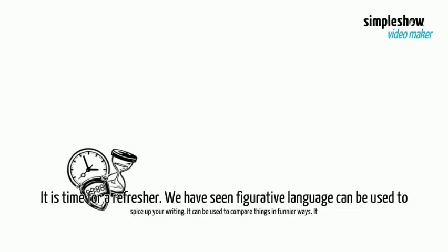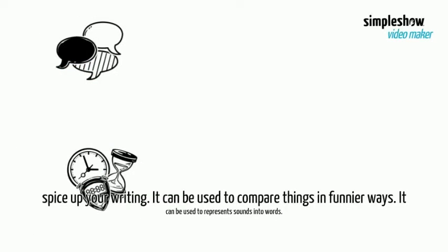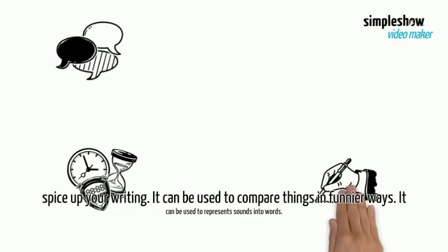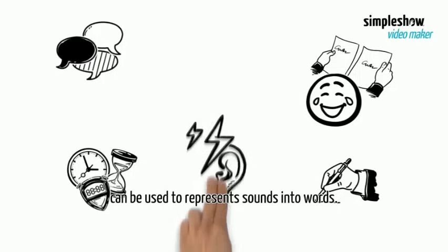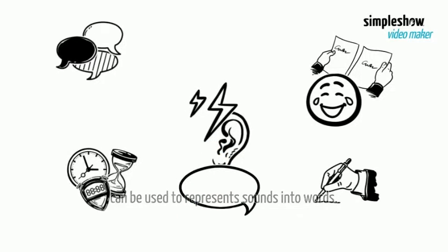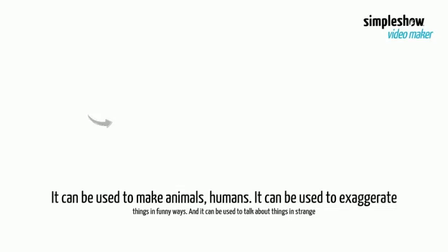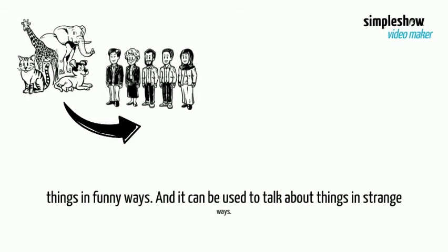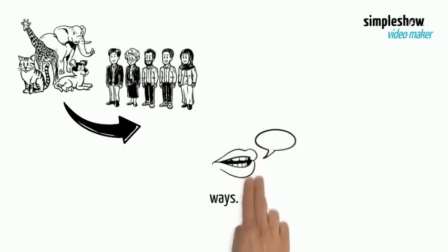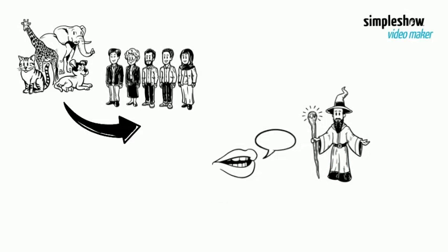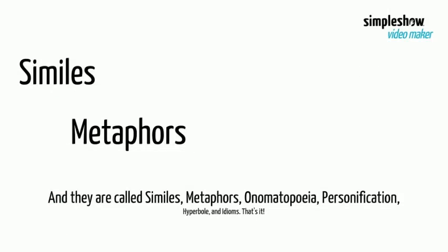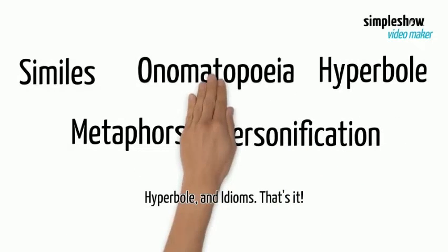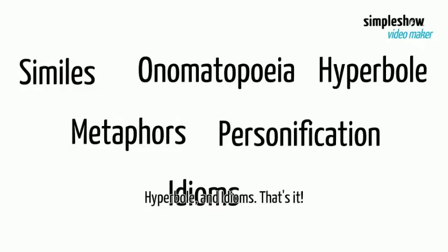It's time for a refresher. We have seen that figurative language can be used to spice up your writing. It can be used to compare things in funnier ways. It can be used to represent sounds into words. It can be used to make animals seem human. It can be used to exaggerate things in funny ways. And it can be used to talk about things in strange ways. And they are called similes, metaphors, onomatopoeia, personification, hyperbole, and idioms. That's it.